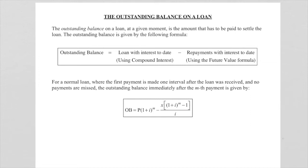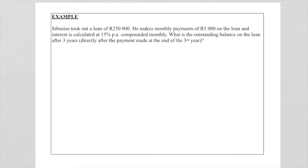So let's now look at an example to illustrate this. In this example, Sibusiso took out a loan of 250,000. He makes monthly payments of 5,000 rand on the loan and interest is calculated at 15 percent per annum compounded monthly.